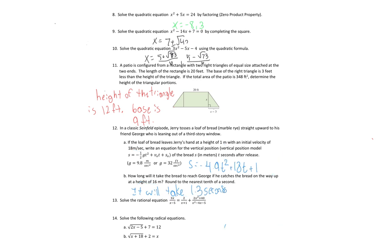Next, solve the rational equation. First I list my restrictions: when the denominators equal zero. x cannot be 5 (from x minus 5), and cannot be negative 1 (from x plus 1). The last denominator factors to (x minus 5)(x plus 1), so those restrictions are already covered. If we get 5 or negative 1, we throw those out because that would mean dividing by zero.